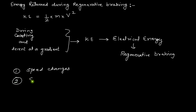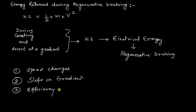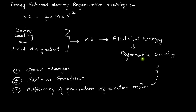The second factor would be the slope or the gradient — how steep the gradient is. The third factor would be the efficiency of generation of the electric motor. So while calculating the amount of energy generated during regenerative braking, we should consider the speed variations, the gradient, and the efficiency of the motor system. Let us try to derive an expression for the energy return during regenerative braking.